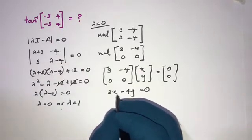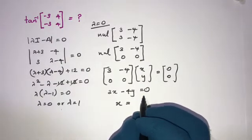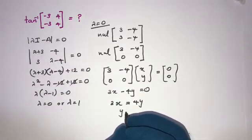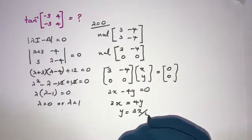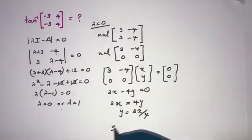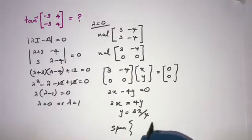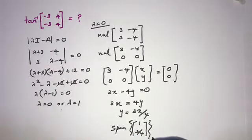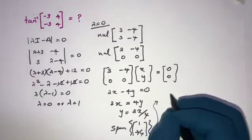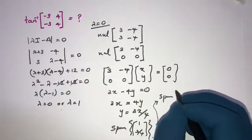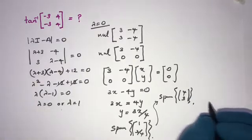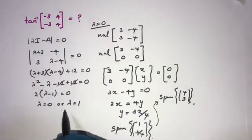From 3x minus 4y equals 0, we get x equals 4y over 3, or y equals 3x over 4. We can write the eigenvector as a span of [1, 3/4], which is equivalent to the span of [4, 3].